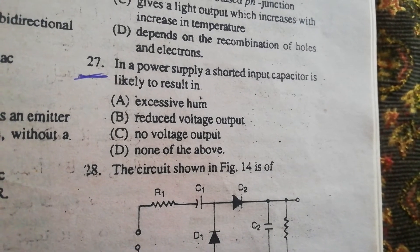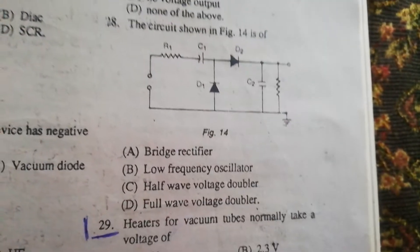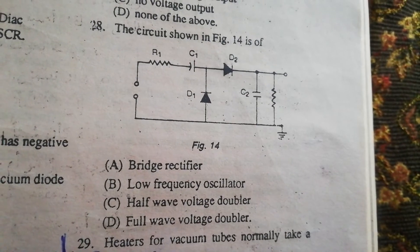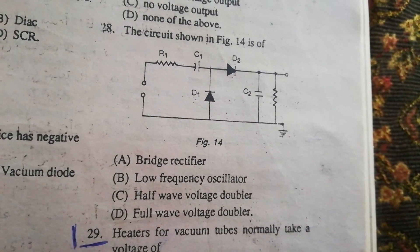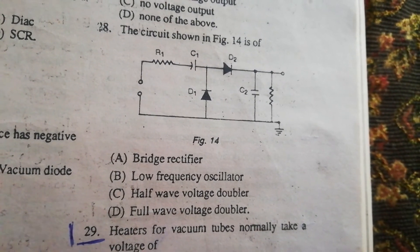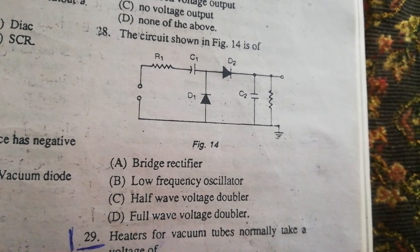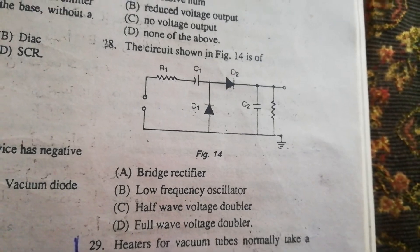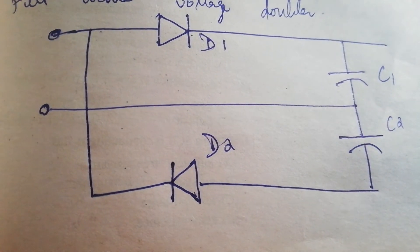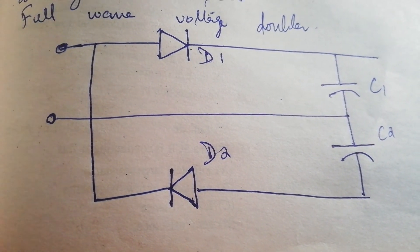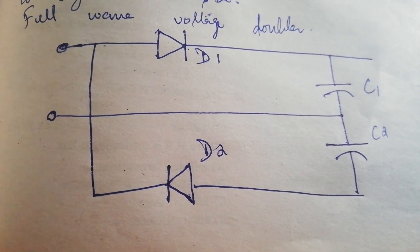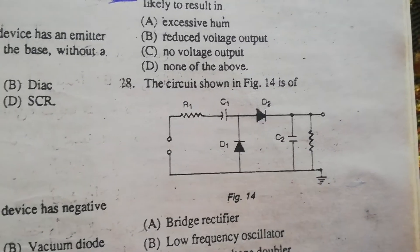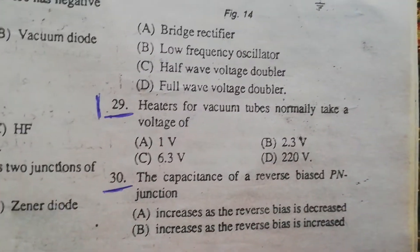In a power supply, if the input capacitor has been shorted, there will be no output voltage. This circuit shows a half-wave voltage doubler — examining the polarity helps understand the half-wave voltage doubler. The full-wave voltage doubler has two diodes but in different positions compared to the half-wave configuration.